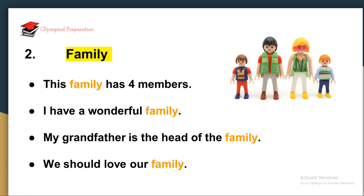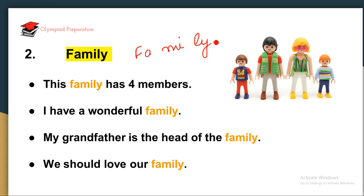The next word is 'family.' As you already know, family is a unit where all the members live together, eat together, and they love each other. How to spell it? Family — FA-MI-LEE. Let us see the use of the word family in sentences. First one: 'This family has four members.'